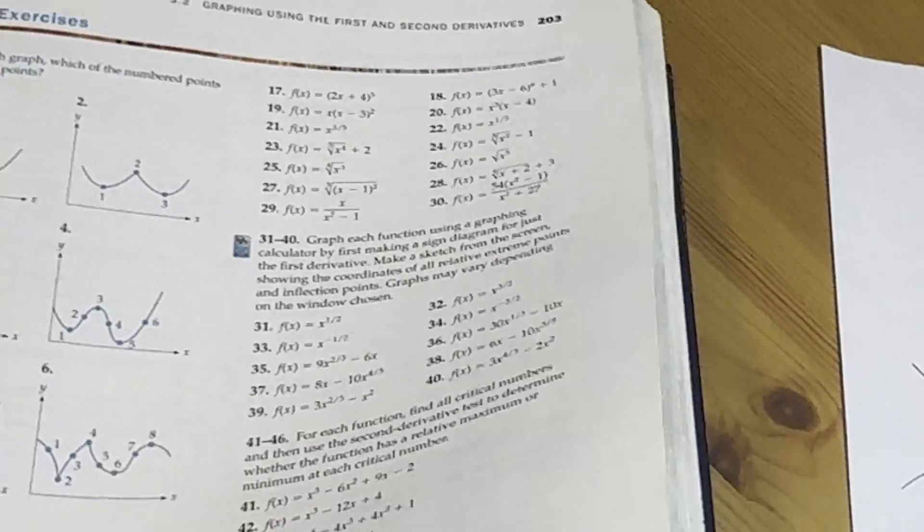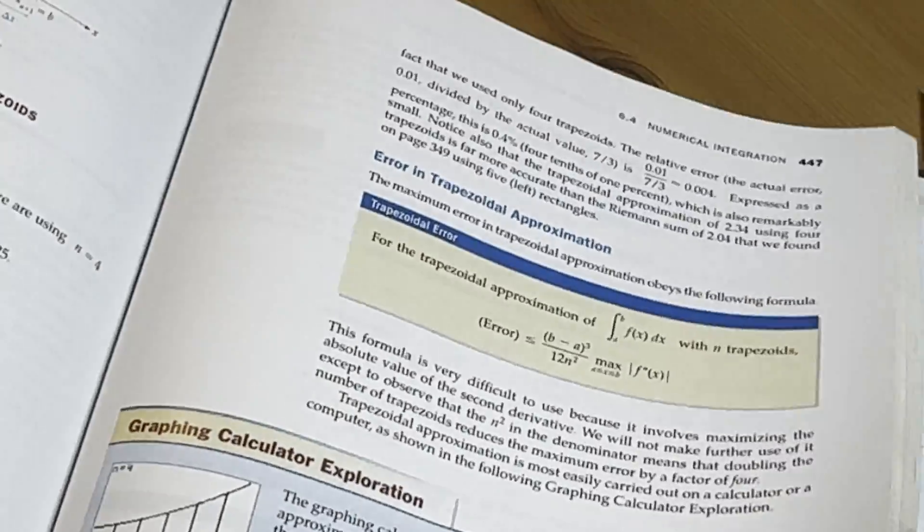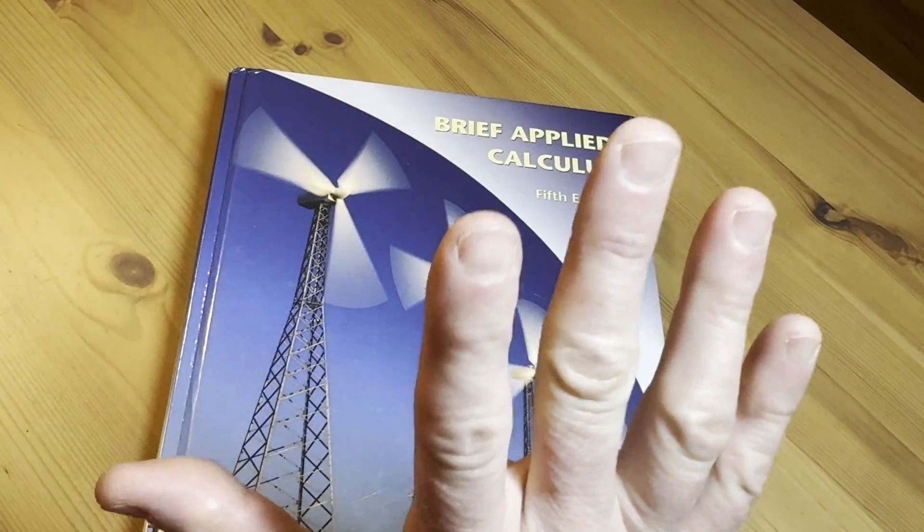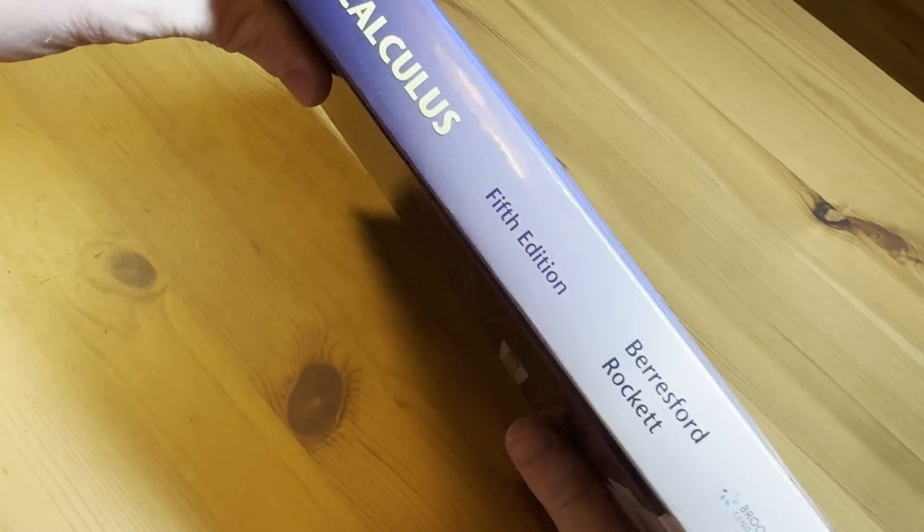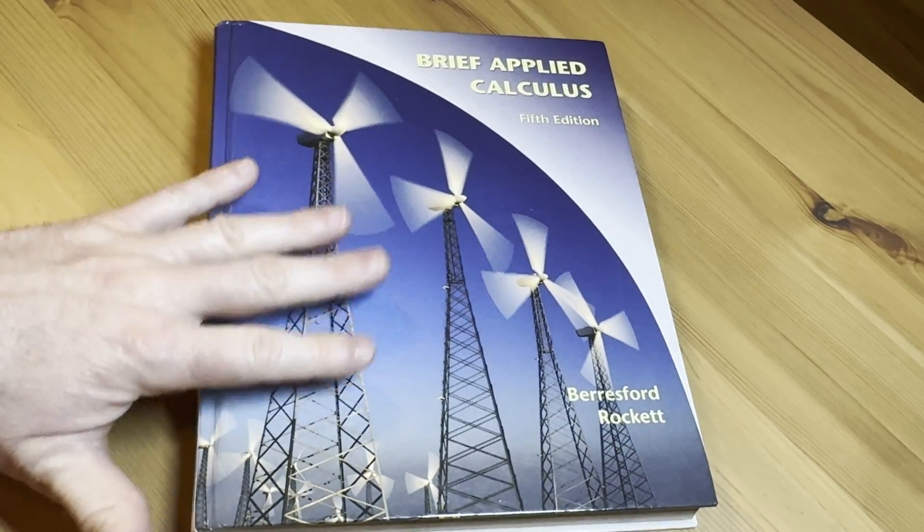And I have another channel in Spanish, and I have another channel called The Internet Sorcerer. So I'm all over the internet. But this book is worth it. And I will leave a link in the description in case you want to check it out. I love it. The worst thing about this book is probably the price, but I think it's worth every penny. As always, keep doing mathematics.